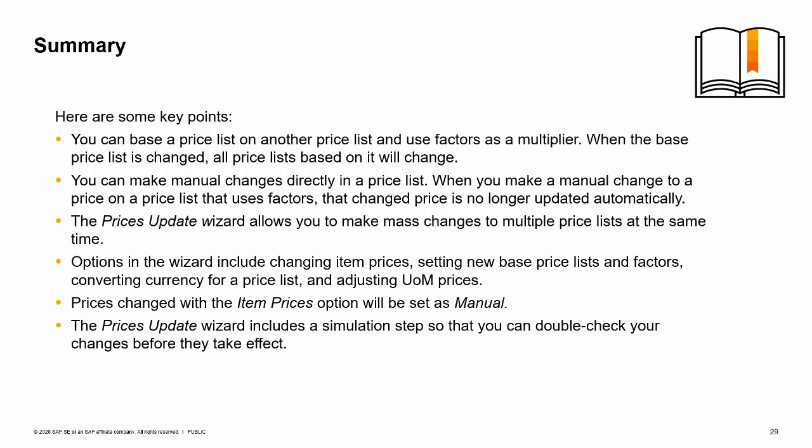Here are some key points. You can base a price list on another price list and use factors as a multiplier. When the base price list is changed, all price lists based on it will change. You can make manual changes directly in a price list; when you do, the changed price is no longer updated automatically. The prices update wizard allows you to make mass changes to multiple price lists at the same time. Options in the wizard include changing item prices, setting new base price lists and factors, converting currency for a price list, and adjusting unit of measure prices using the reduce by percentage field. Prices changed with the item prices option in the wizard will be set as manual and no longer subject to automatic pricing updates. The wizard includes a simulation step so that you can double-check your changes before they take effect.